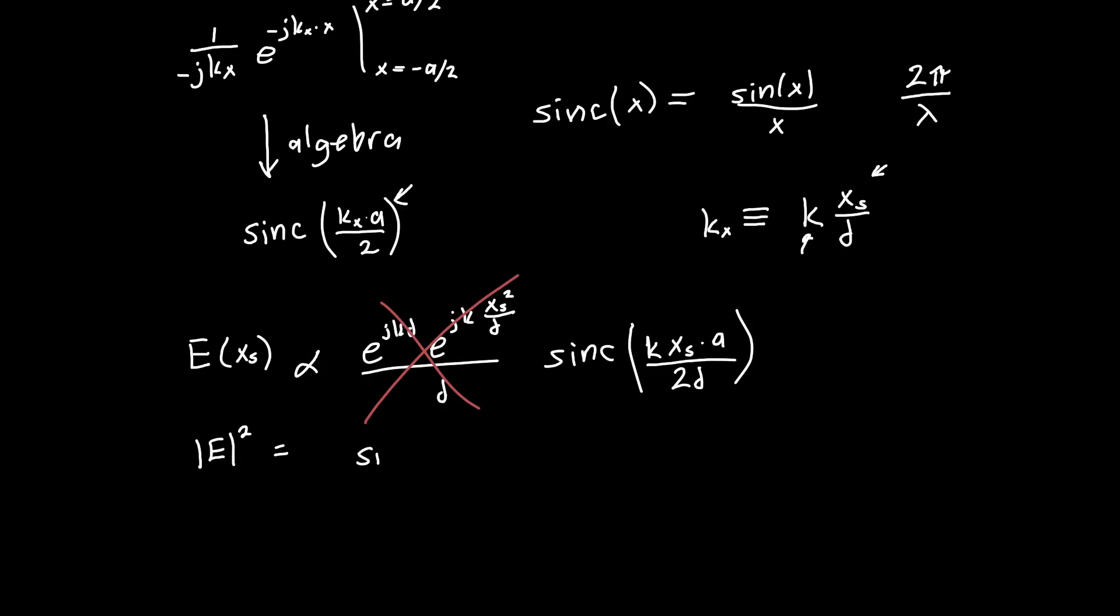In that case, the pattern looks like sinc squared of kxs a over 2d. And it's got some constant out front, which we're not sure about. Let's call that u naught. But this is the really important part, the pattern.